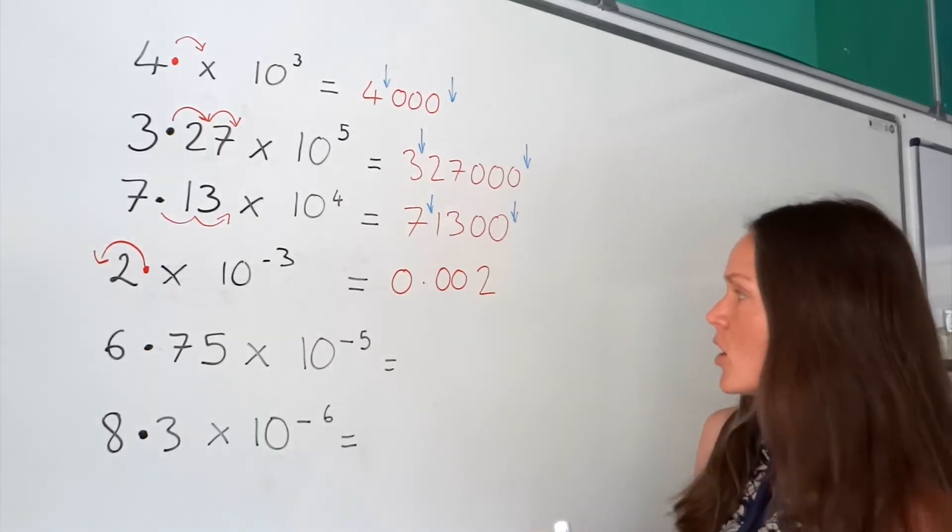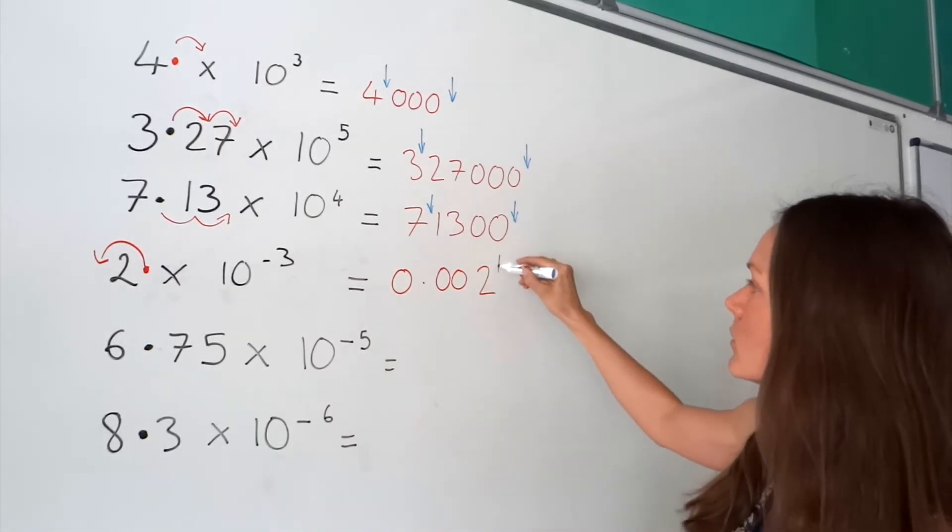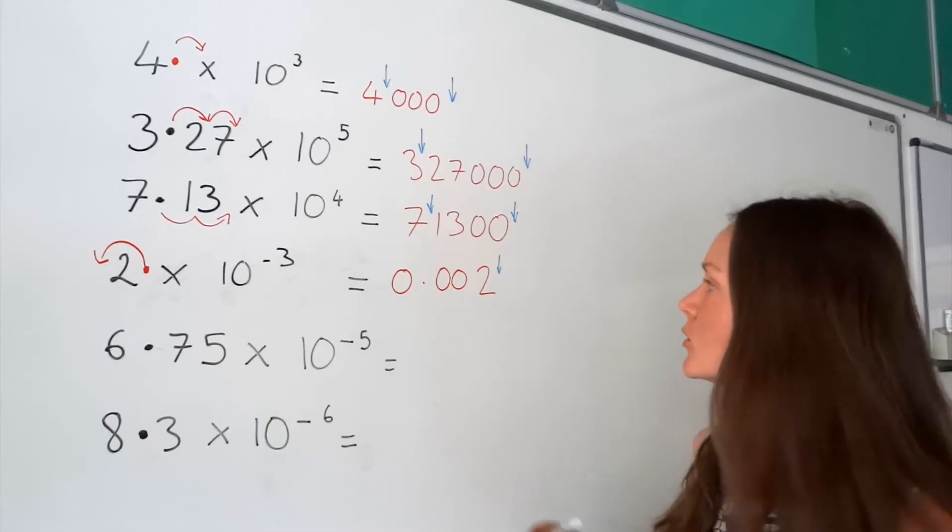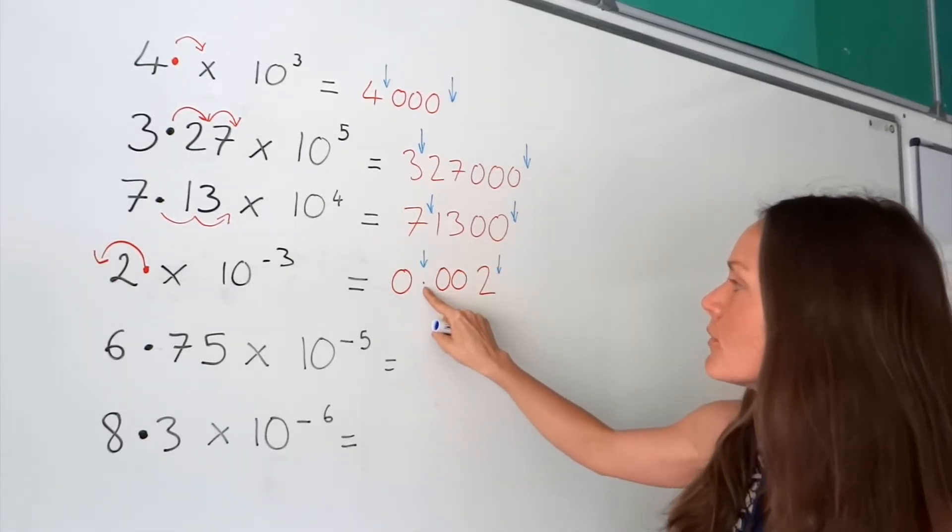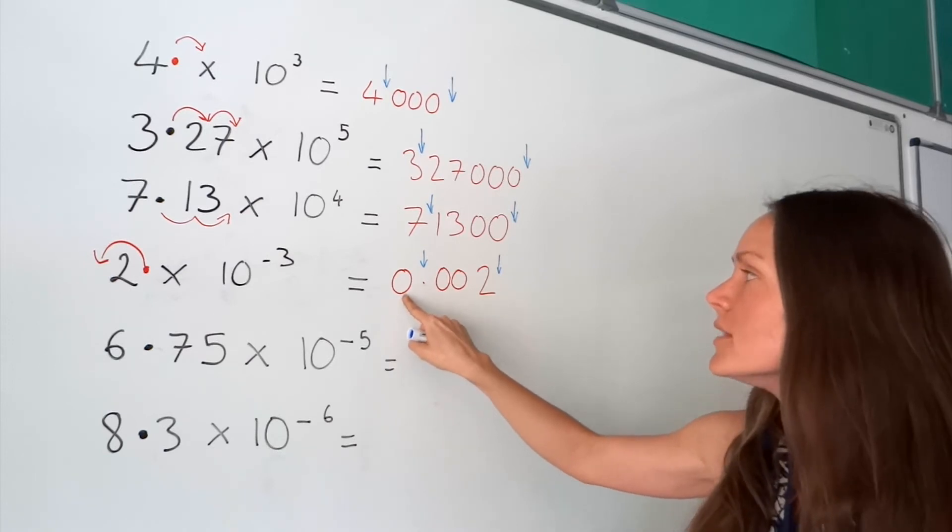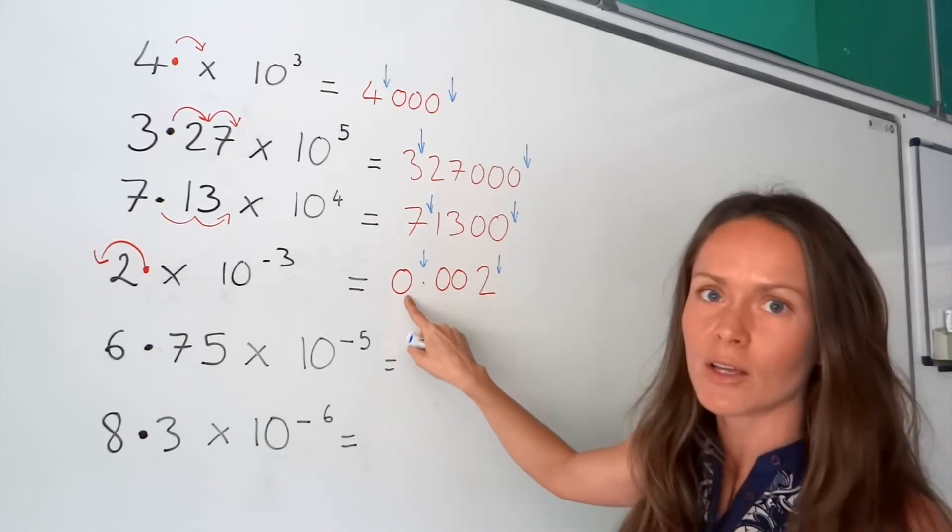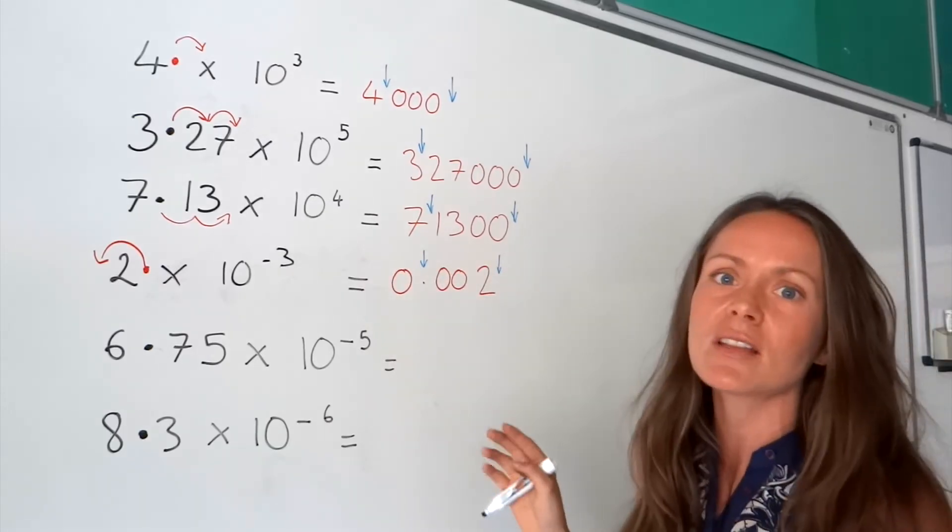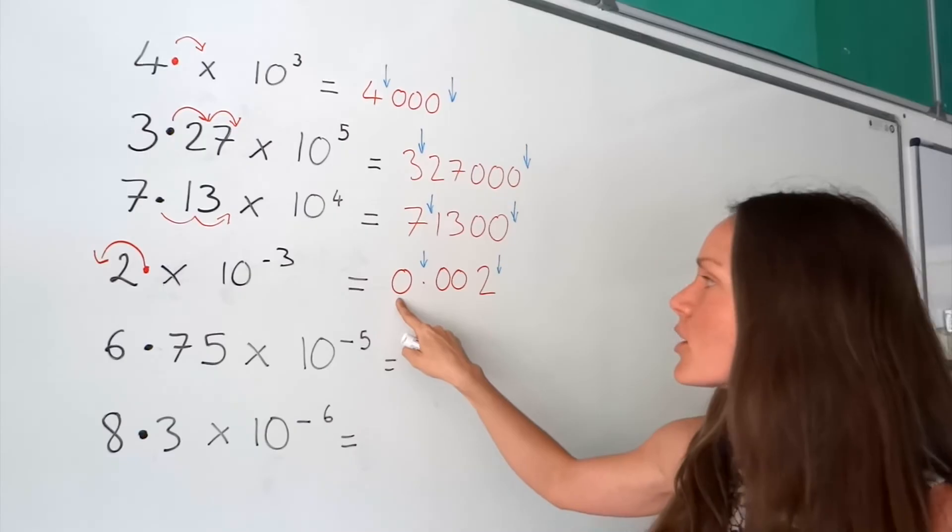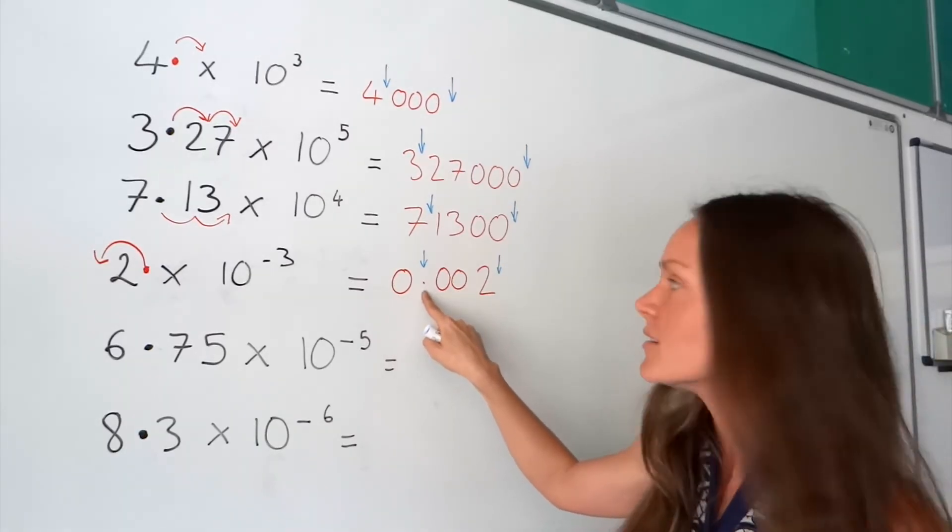So, for this one, it's going to look like that, because the decimal used to be after the two, and now it's there. So, I've moved one, two, three places. Now, this zero, it's not wrong if we don't put the zero in, because 0.002 is the same thing. It's just nice and tidy if we put the zero in front of this decimal here.